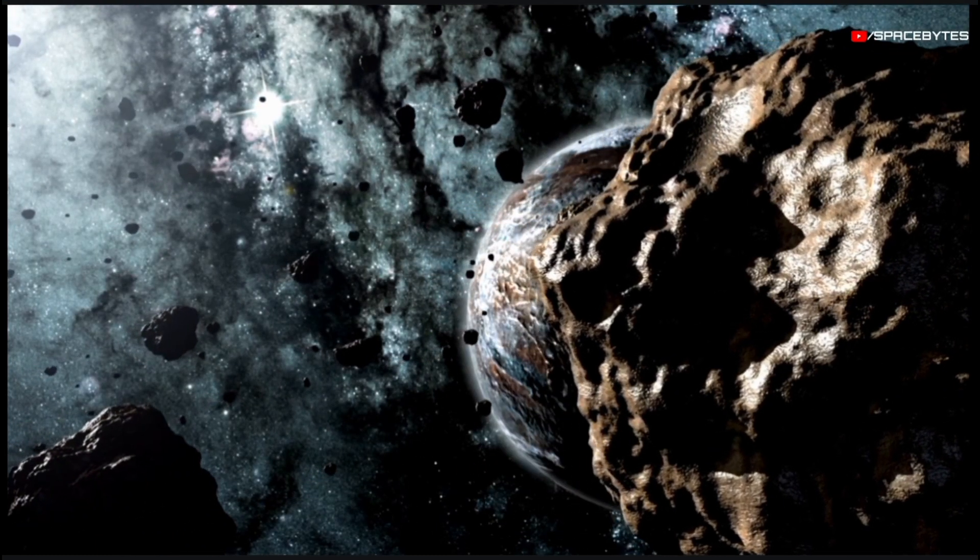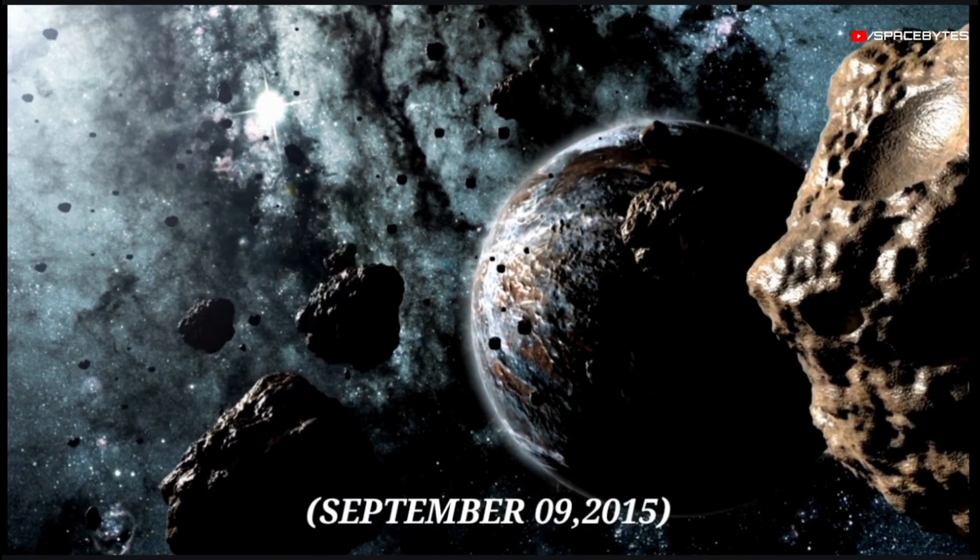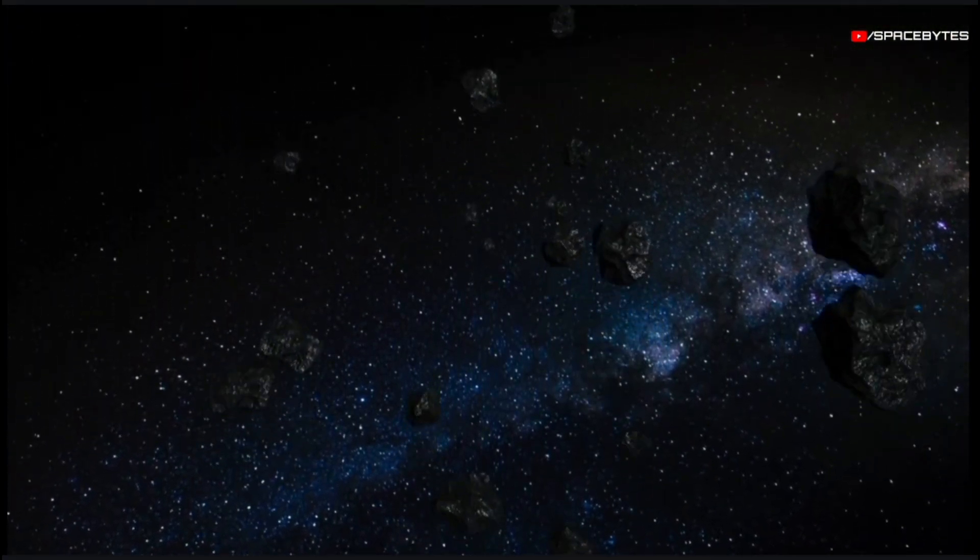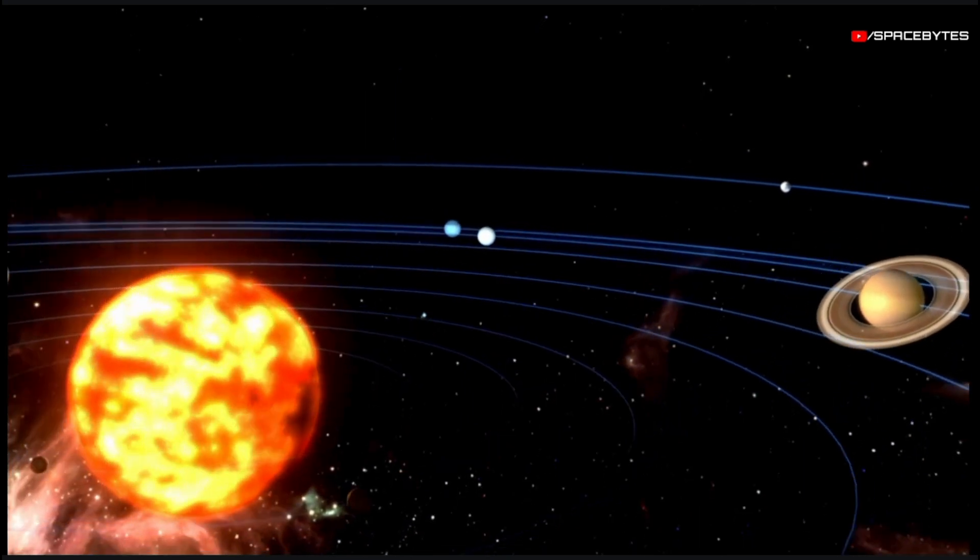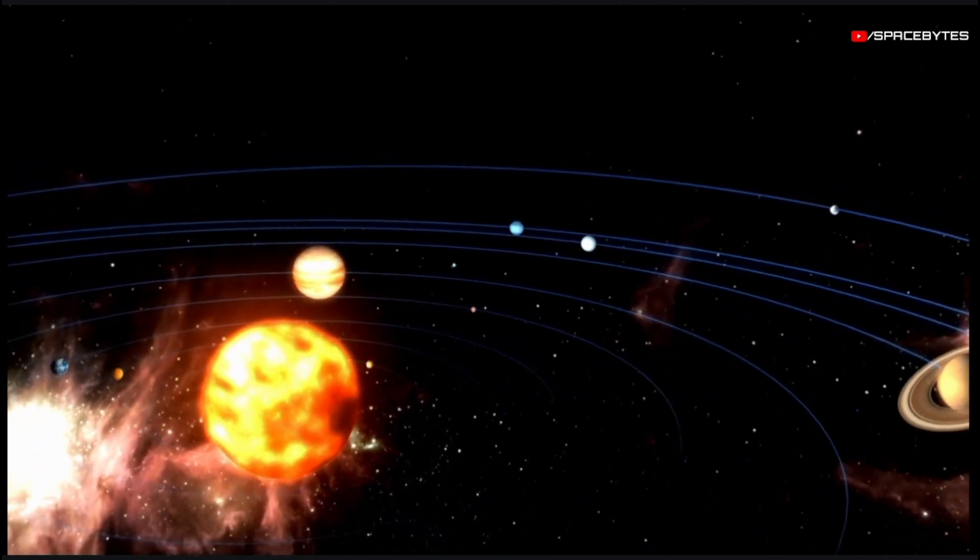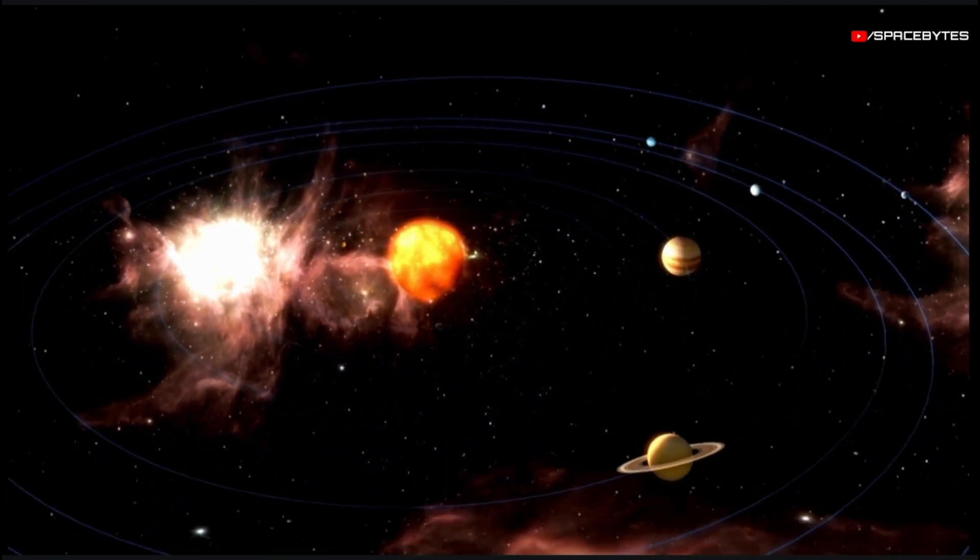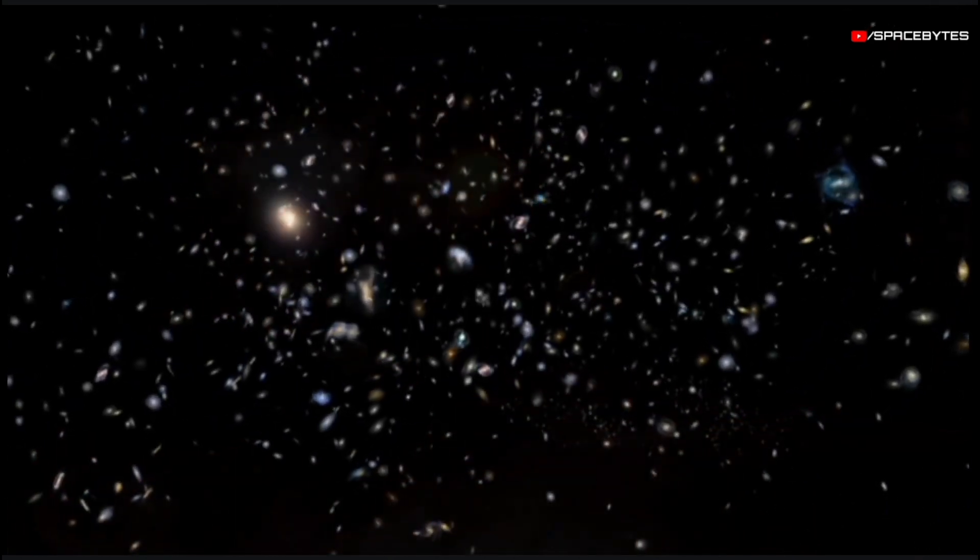The asteroid 2015 RN35 was discovered on September 9, 2015. This near-Earth object belongs to the Apollo group. The distance of the asteroid 2015 RN35 from Earth is currently 2.56 million kilometers, equivalent to 0.02 astronomical units.